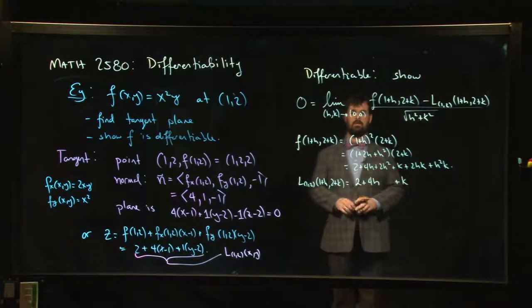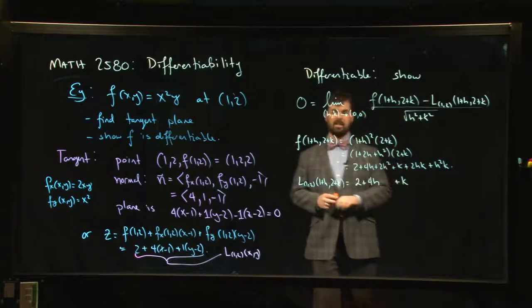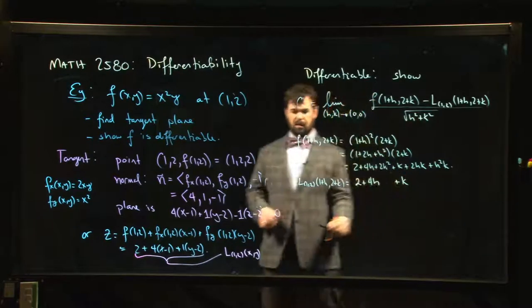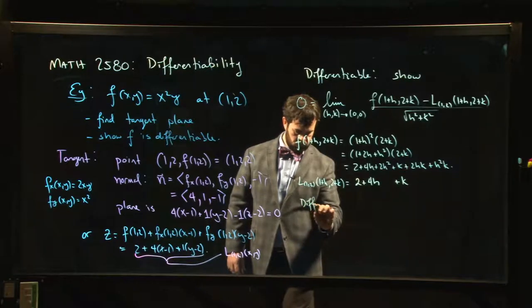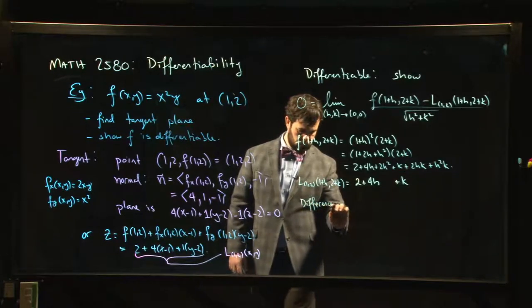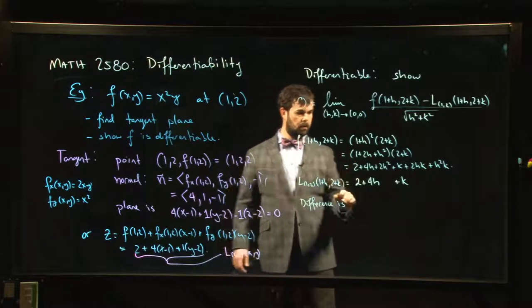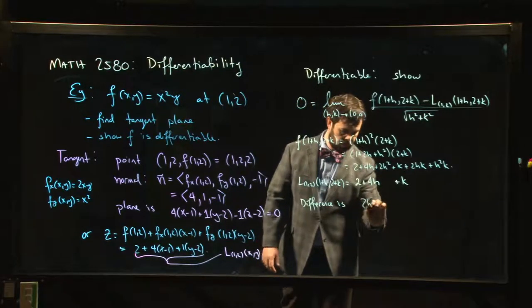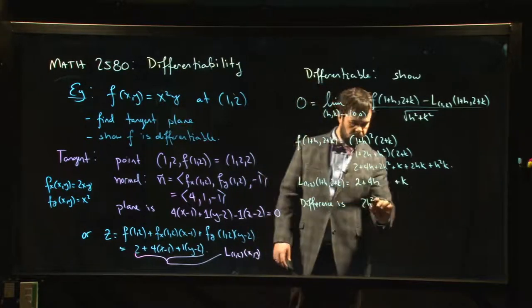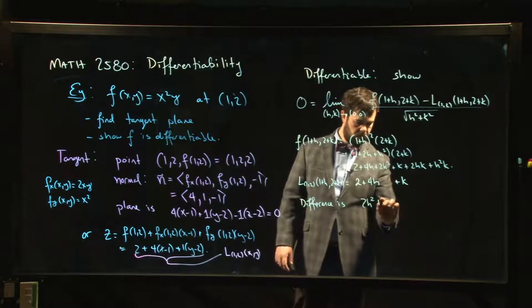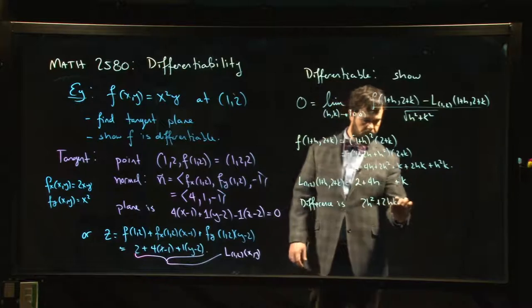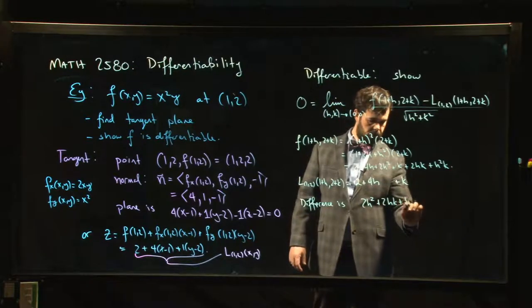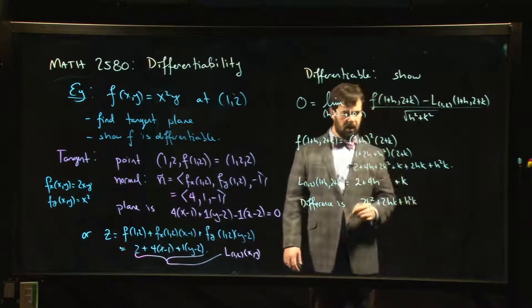Alright, and now I'm subtracting these. So what do I get if I subtract? So the difference is going to be 2h squared plus 2hk plus h squared k.